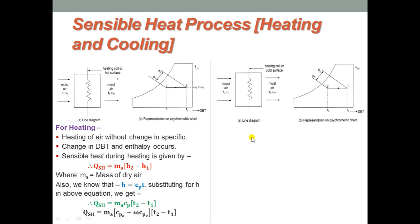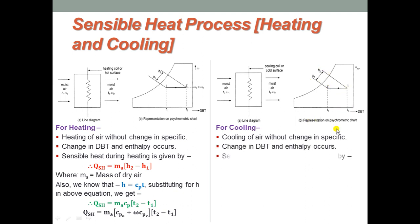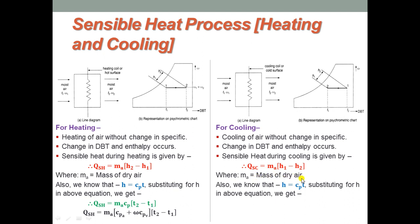Next is sensible cooling, where a cold surface or cooling coil is used and air is made to flow over it. Cooling of air without change in specific humidity occurs — omega remains the same — while dry bulb temperature and enthalpy change. The sensible cooling equation is Q = ma × (H1 − H2), written as H1 minus H2 to avoid a negative sign. Substituting H = Cp × T, Q equals ma × Cp × (T1 − T2), or for moist air, ma × (Cpa + ω × Cpv) × (T1 − T2).